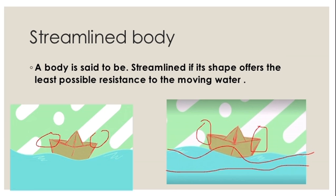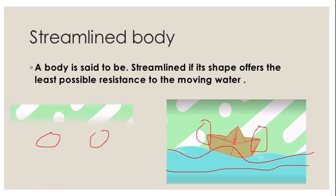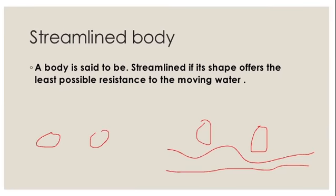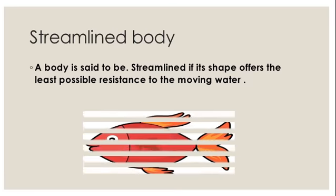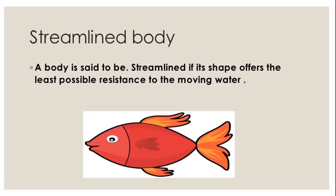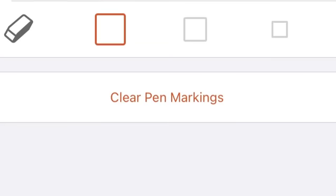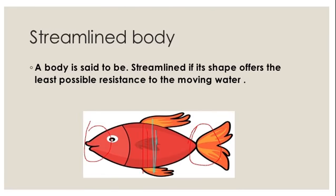This shape shows the direction of the water and helps to move and float in water. Similarly, when you look at the fish, it is same as the boat — it is tapered at both ends and broad in the middle. That is why it helps to move smoothly.